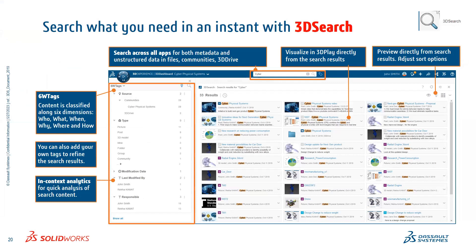Now let's go to 3D Search. 3D Search has the capability to search any kind of content available on the platform — whether it be a CAD file, Excel file, user profile, or a 3D Swim post — using the advanced capabilities of 6W tags. The 6W tags stand for what, when, where, which, who, and how. These are specific tabs for an intended purpose: to organize and filter your content. These tags help you filter content based on metadata, meaning you can search a single file using different available metadata. You are not restricted to the file name.